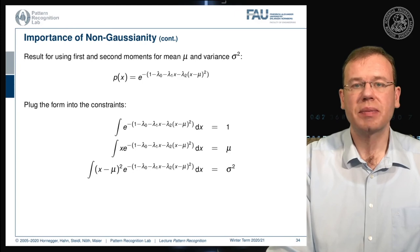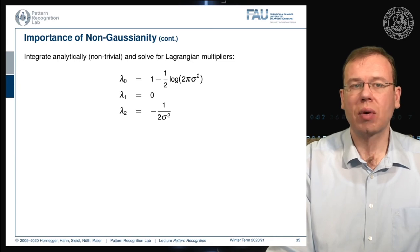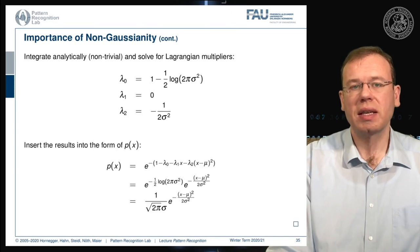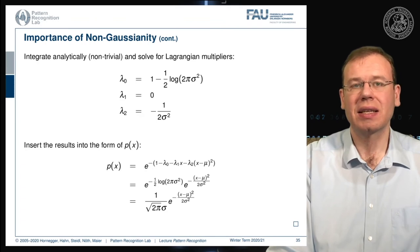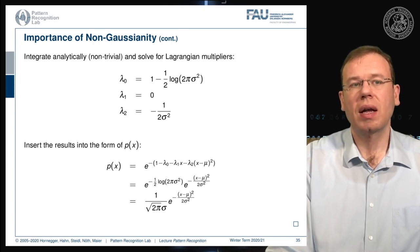Inserting these Lagrange multiplier values into our probability density function and rearranging gives exactly the Gaussian distribution. Therefore, the Gaussian distribution is the distribution that maximizes entropy for a given mean and variance.